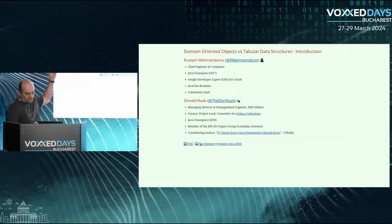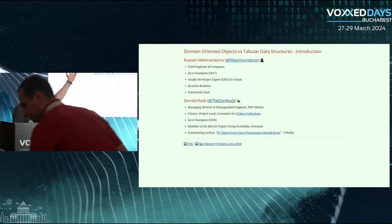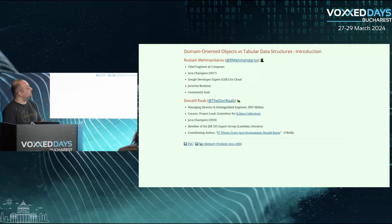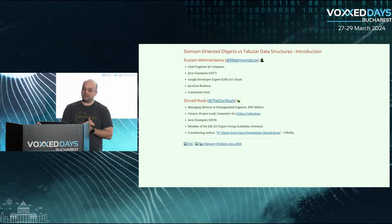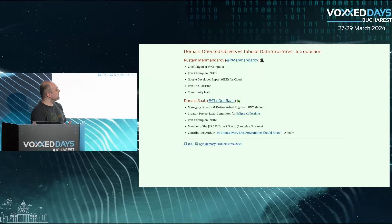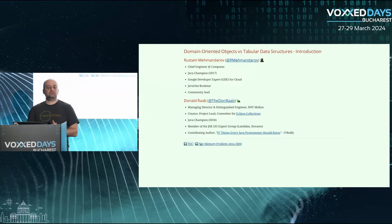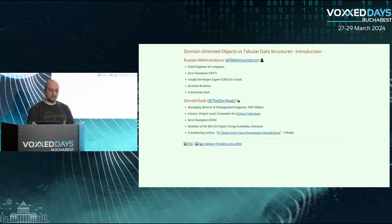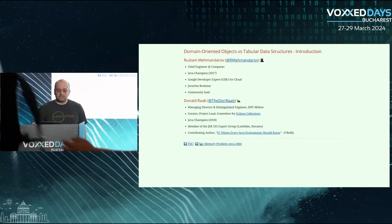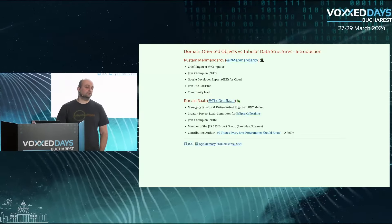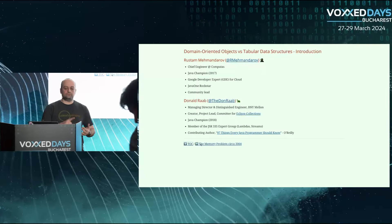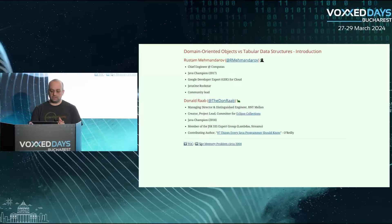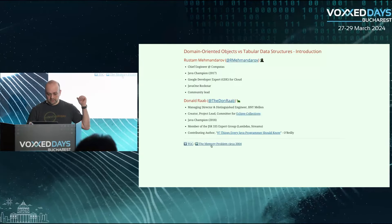I usually do this talk together with a friend of mine — Donald — who is the creator of Eclipse Collections, which we'll be talking about. My name is Rustam. I'm working in a company in Norway called Computas. We have an office here as well, with a team working in Romania in Bucharest. I've been a Java Champion since 2017, and since 2019 I've also been a Google Developer Expert for Cloud. I work quite a lot with code, architecture, and I run some communities back in Oslo, Norway.